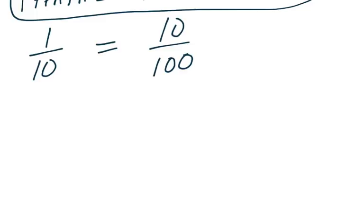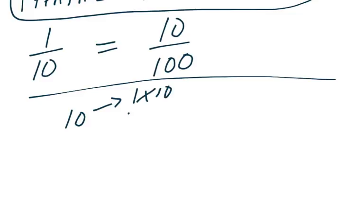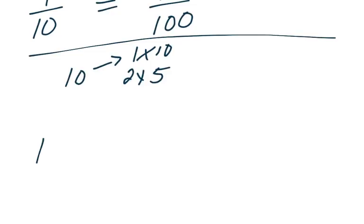If I list all of my factors of ten: one times ten, two times five. Now I list all of my factors of one hundred.